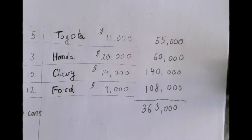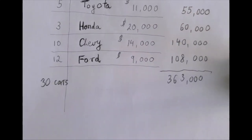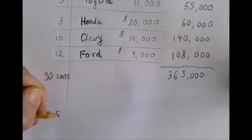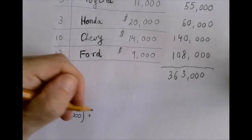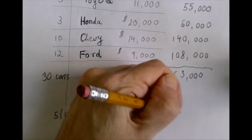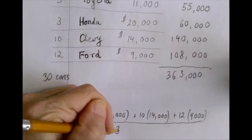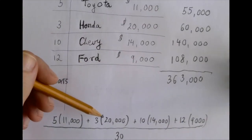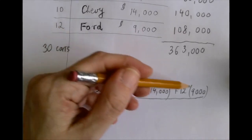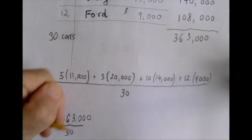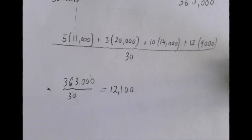The average value is going to be when we divide by 30. Let me write out the computation because the notation is revealing. We have: (5×11,000 + 3×20,000 + 10×14,000 + 12×9,000) ÷ 30. This long numerator is 363,000, and so our answer is 363,000 ÷ 30 = $12,100.